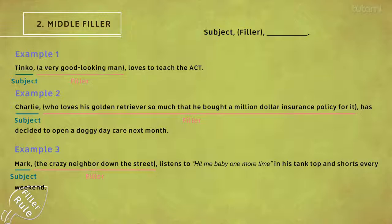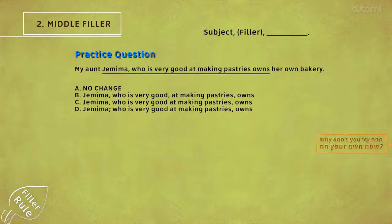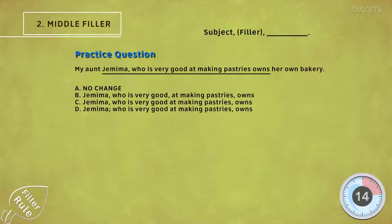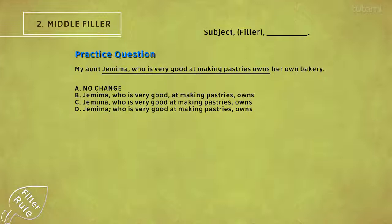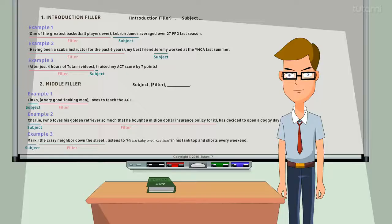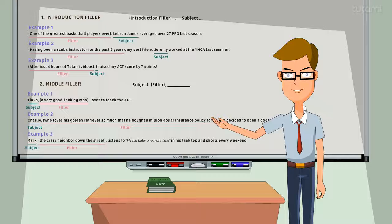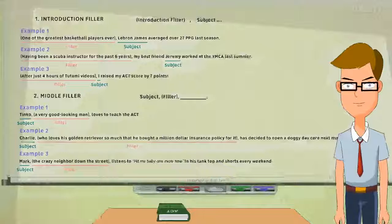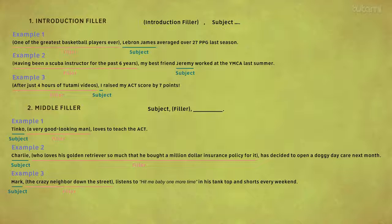As you can see in this situation, the subject is on the left and the middle is the filler. Why don't we take a look at a practice question on your own? Welcome back. In this situation, C made the most sense since the descriptive filler was in the middle of the sentence. Since the subject is in the beginning, I know to use commas to surround the filler. So, fillers that come at the beginning or the middle of a sentence require a comma or commas — one if the filler is in the beginning, and two if it's in the middle.